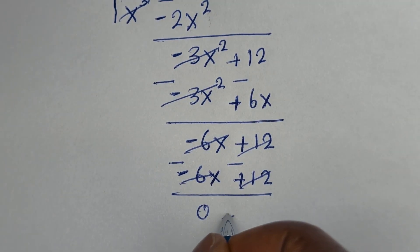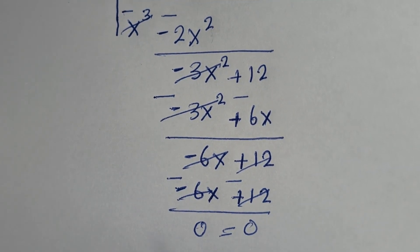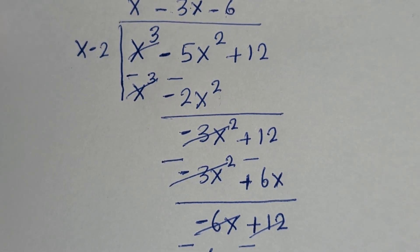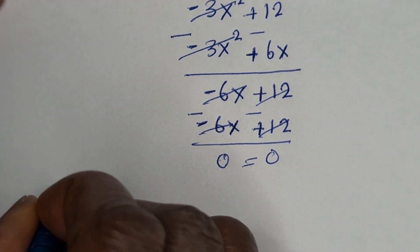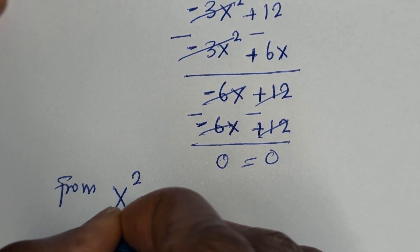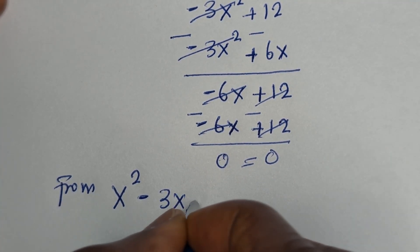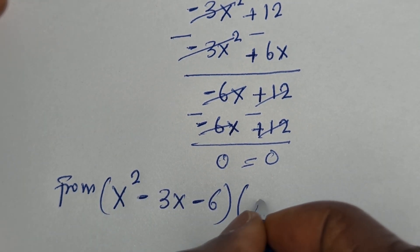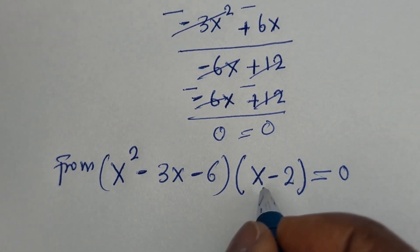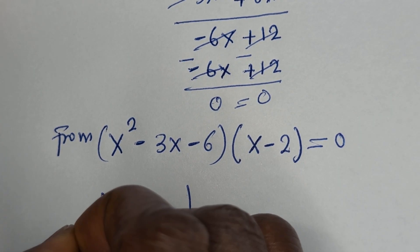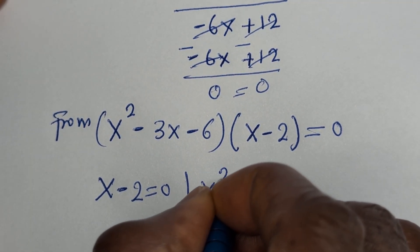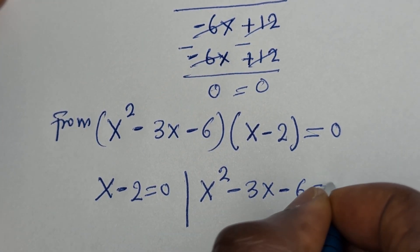Multiplying by minus 1 cancels, giving remainder 0. Therefore we have the quadratic equation s squared minus 3s minus 6. So from s squared minus 3s minus 6 times s minus 2 equals 0, there are two cases: the first case is s minus 2 equals 0, and the second case is s squared minus 3s minus 6 equals 0.